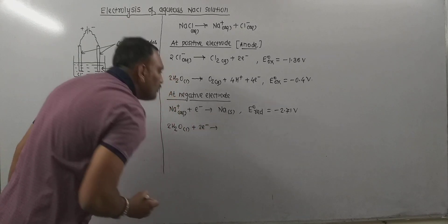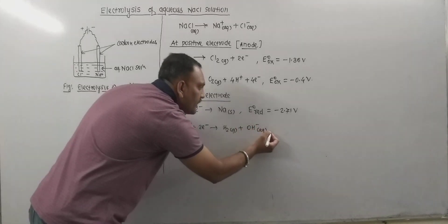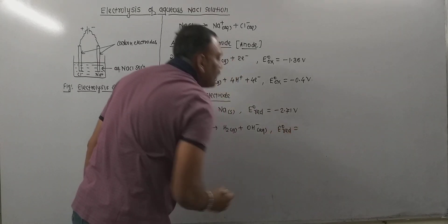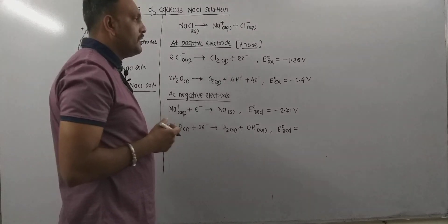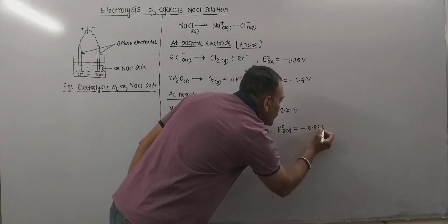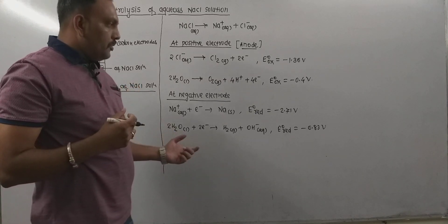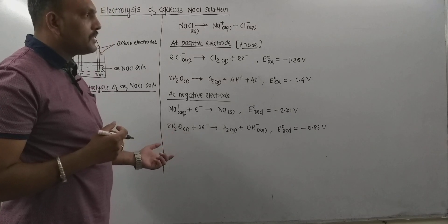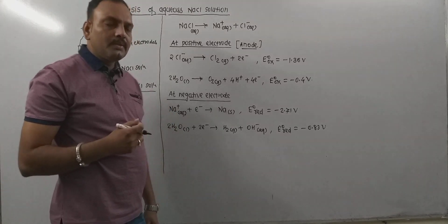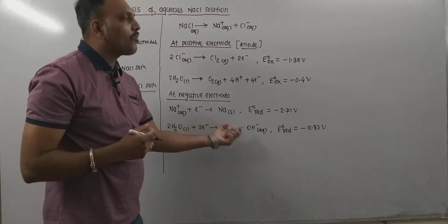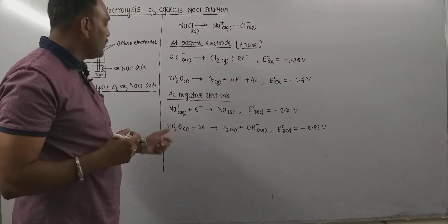When water is reduced, hydrogen gas is liberated along with OH⁻ ions. The standard reduction potential for water reduction is −0.83 V. Since −0.83 V is higher than −2.71 V for Na⁺ reduction, water undergoes reduction rather than sodium ions at the negative electrode.